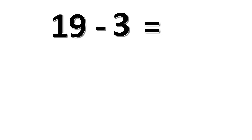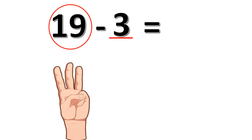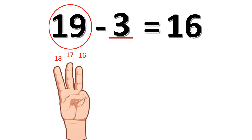Now we're going to solve 19 minus 3. First, which one is the bigger number here, students? Yes, 19 is the bigger number, so we're going to start counting backward from 19. Who is the smallest number here? Yes, 3 is the smallest number. So all of you, let's have 3 fingers up. Start from 19, we're going to count backward: 19, 18, 17, 16. So 19 minus 3 is equal to 16.